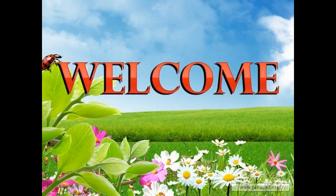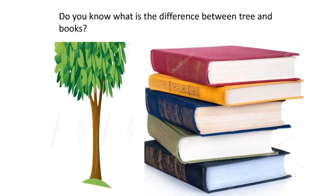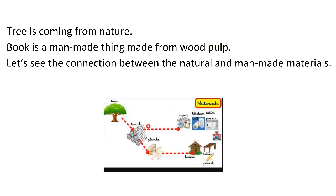Hello everyone, welcome to grade 2 science class. Do you know what is the difference between a tree and a book? A tree comes from nature, while a book is a man-made thing made from wood pulp. Let's see the connection between natural and man-made materials.